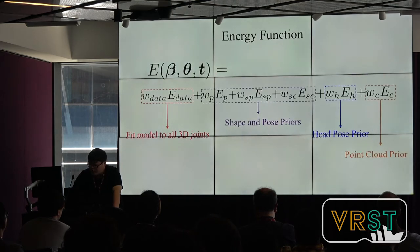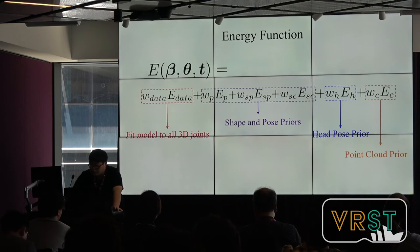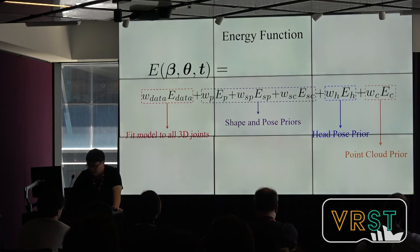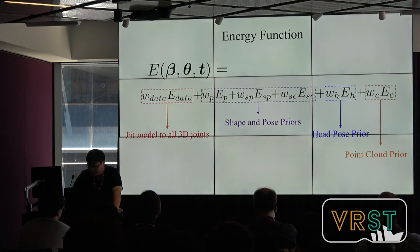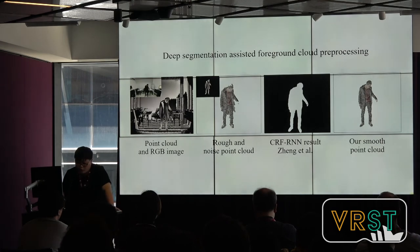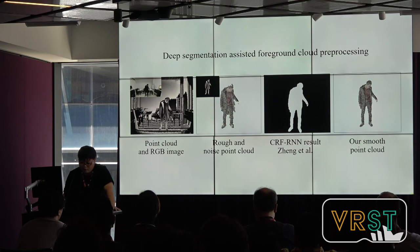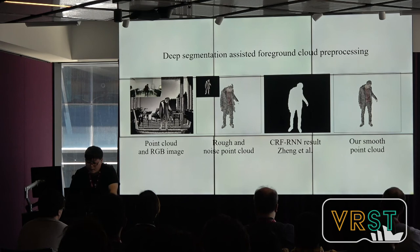We now show the energy function to compute the model iteratively based on the composed skeleton. This function consists of several parts. The data term E-Data aligns the model to all 3D joints. E-P, E-SP, and E-SC are shape and pose regularization terms. E-H is the hand pose term and E-C is the point cloud term. Our method also leverages several RGB image-based deep learning methods for smoothing the point cloud and modeling the full body. We first apply CRF-RNN to obtain a smooth foreground from the RGB image, which then helps reduce the noise of the point cloud.